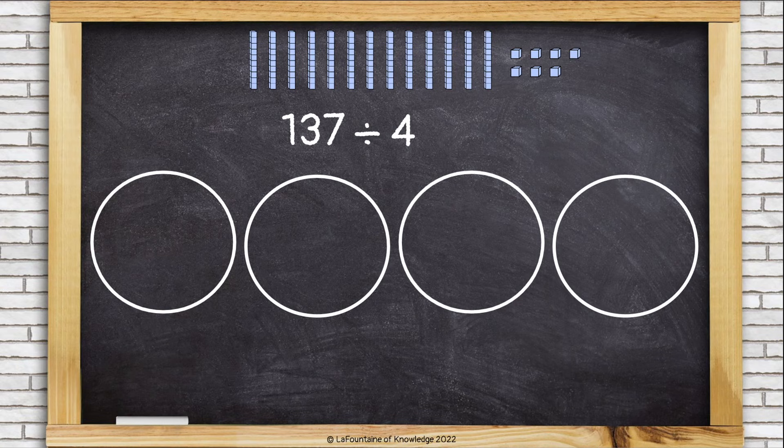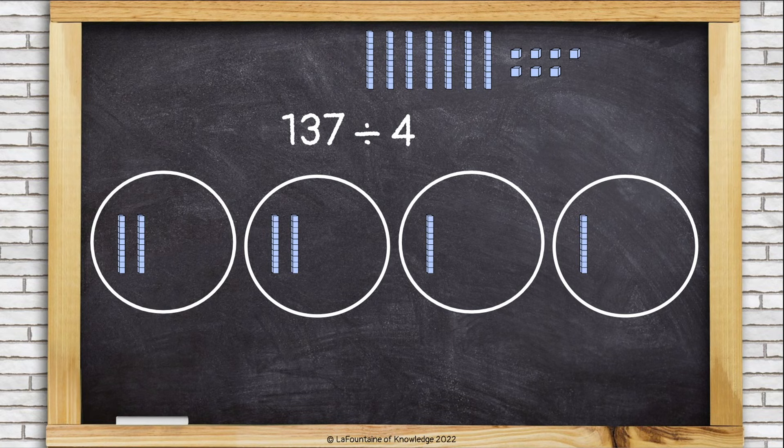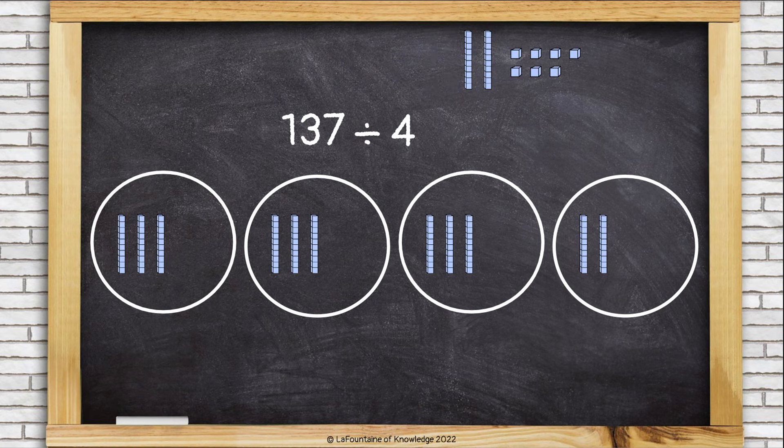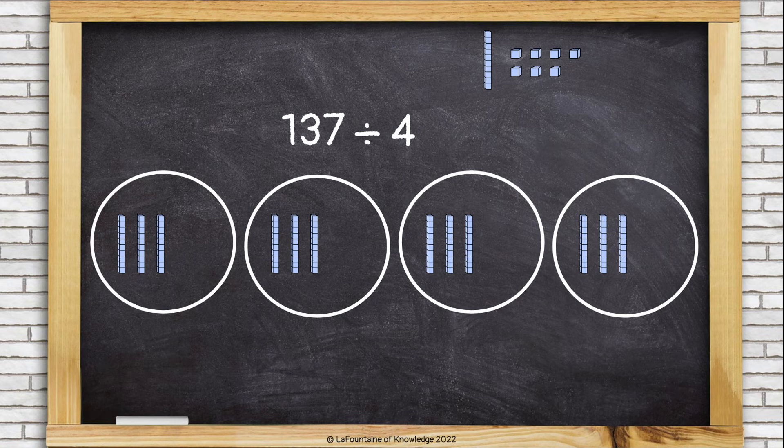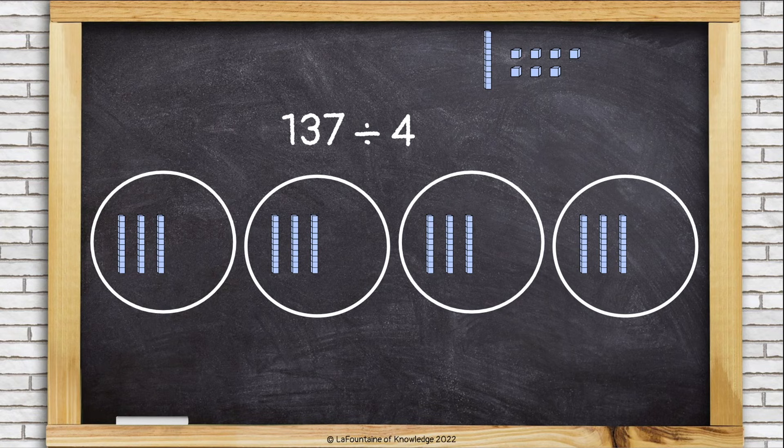Now I can divide up my tens. Let's give one to each group and see how this works out. Okay, so each group has three tens, but I have one ten left. I can't put it in any of these groups or they won't be even. I need to unbundle this ten and change it into ten ones.